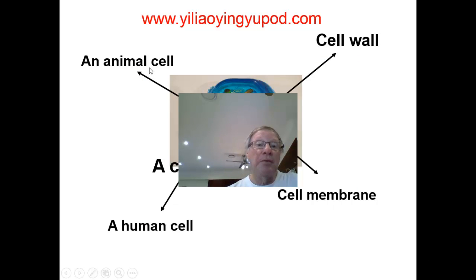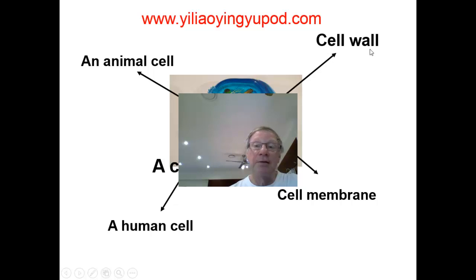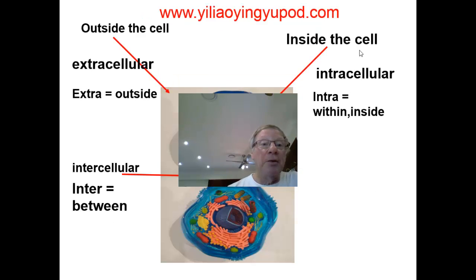So we have an animal cell, a cell wall, a cell membrane. Obviously, if this has a cell wall, this is a plant cell, because human cells don't have cell walls.